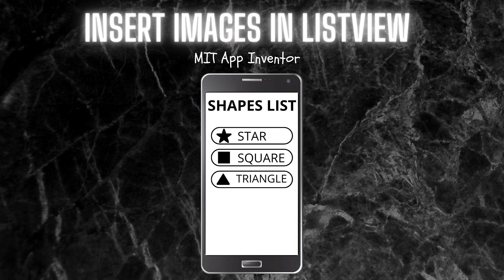Hello, I am Krishna Raghavendran and in this tutorial of MIT App Inventor we are going to see how to insert images in a list view. As you can see, you can insert an image at the side, and if you want you can also put the text and the image together in a list item.